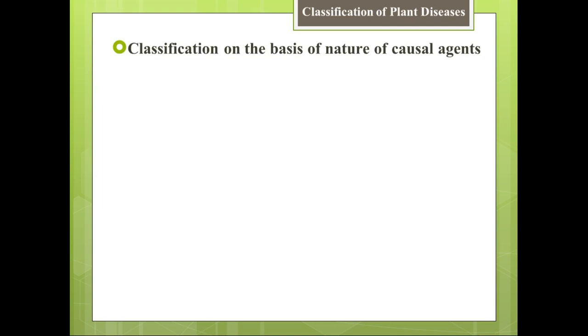Number one is classification on the basis of nature of causal agent. Causal agent ki nature ke lihaz se plant diseases ko do hisso mein divide kiya gaya hai: number one is parasitic disease, and the other is non-parasitic or abiotic diseases.